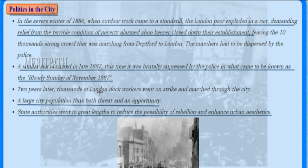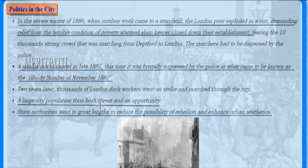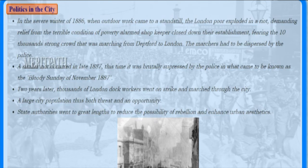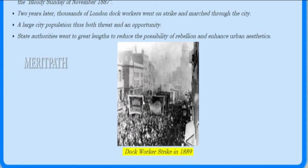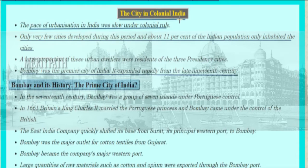Two years later, thousands of London dock workers went on strike and marched through the city. The large city population thus posed both a threat and an opportunity. State authorities went to great lengths to reduce the possibility of rebellion and enhance urban aesthetics.